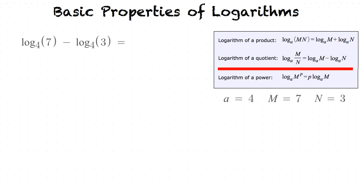So now we see that an equivalent logarithmic expression is going to be log base a of m over n. We have a which is equal to 4, m which is equal to 7, and n which is equal to 3. So putting the pieces together, we end up with log base 4 of 7 over 3.